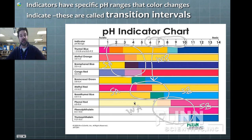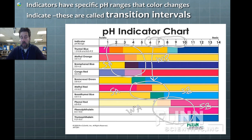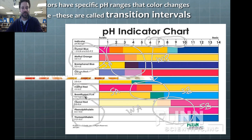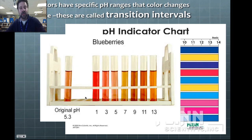The transition interval is a chosen range of pH values that you consider when deciding what indicator to use during your titration. If you have a strong acid and strong base, you use the mid-range indicators; for a strong acid and weak base, use the low-pH ones; and for a weak acid and strong base, use the high-pH ones.